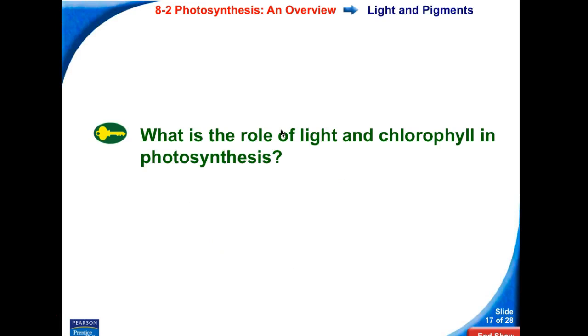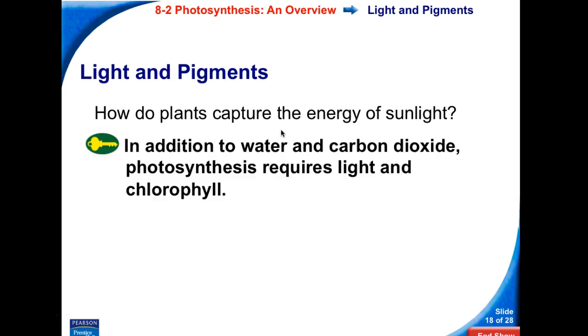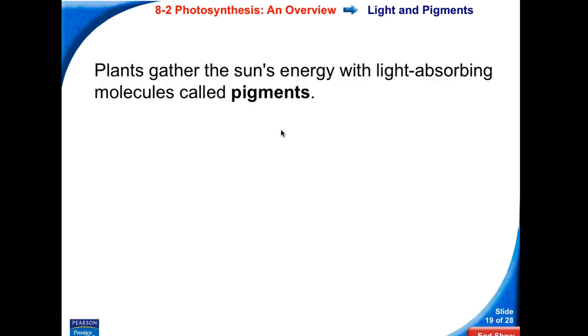What is the role of light and a pigment called chlorophyll in photosynthesis? Light and pigments. How do plants capture the energy of the sun? In addition to water and carbon dioxide, photosynthesis does require that light. And light energy is captured via pigments. A pigment itself is a light absorbing molecule. The main pigment in plants is a molecule called chlorophyll.